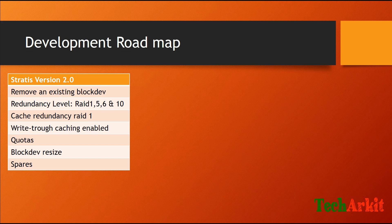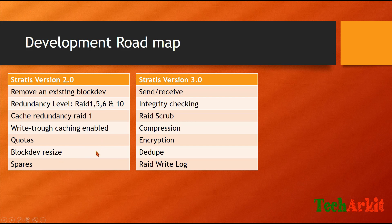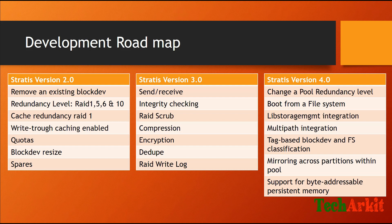Also in version 2: block device resize — if you are using 50% of a block device for a storage pool, you can expand that block size. Spare disk support is planned, where if one disk fails the data will be dumped to the spare. Version 3 will bring send and receive, integrity checking, read scrub, compression, encryption, deduplication, and read/write locks.